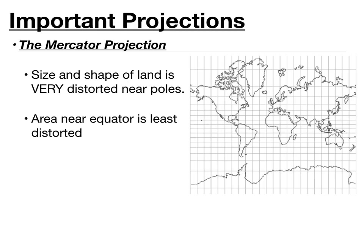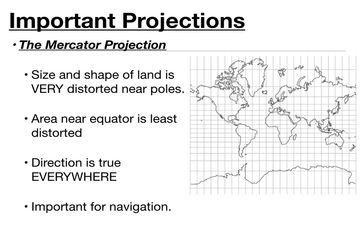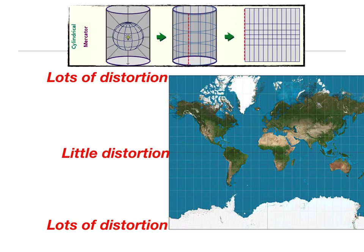The area near the equator is the least distorted on the Mercator projection, while the area around the poles is very distorted. The reason this map is important is because direction is true anywhere — when you draw a line on this map, it's going to be an accurate compass bearing if you follow that line. So it can be used for navigation. This map was used many times throughout history when sailing on the ocean. To review: the Mercator projection has lots of distortion at the poles and little distortion near the equator.